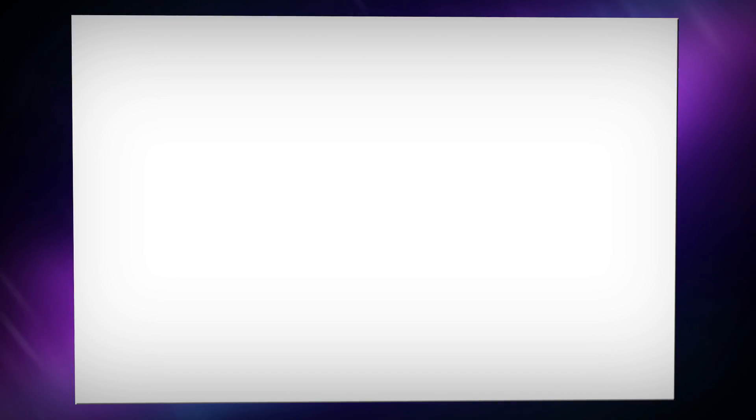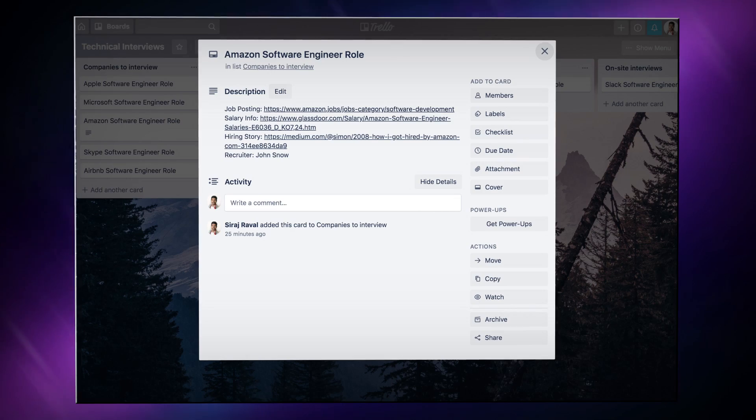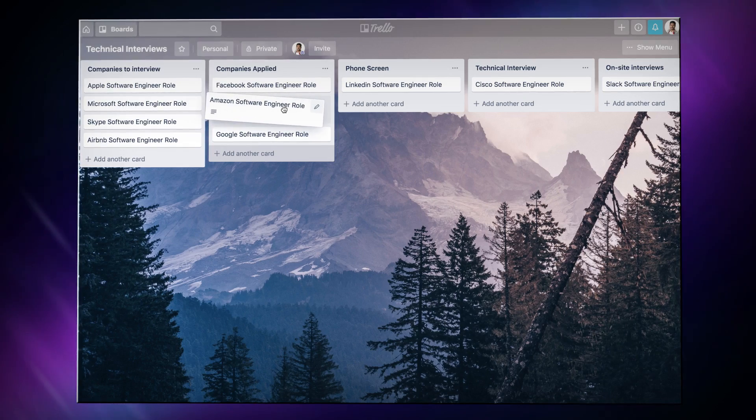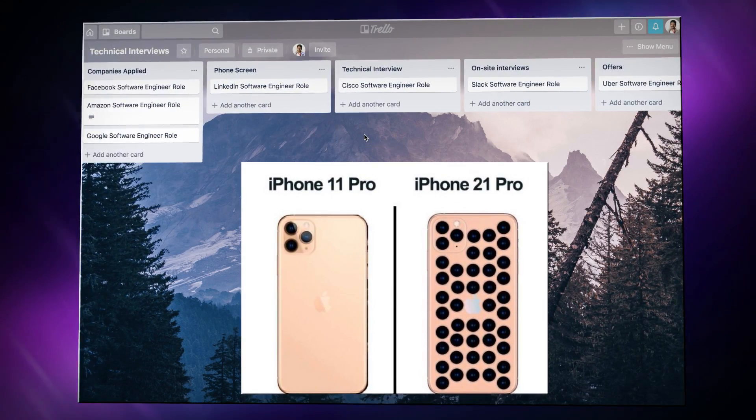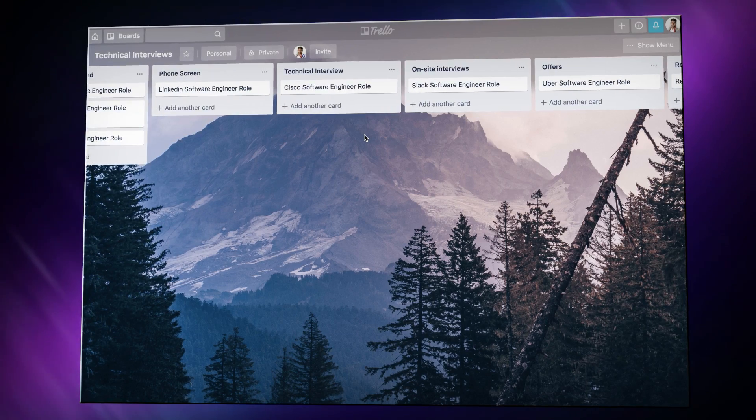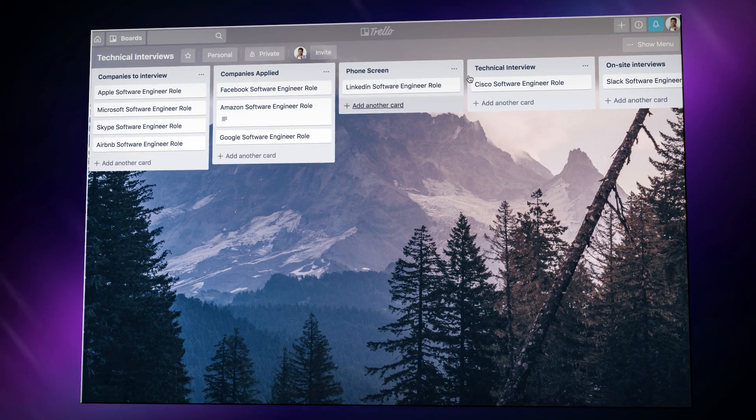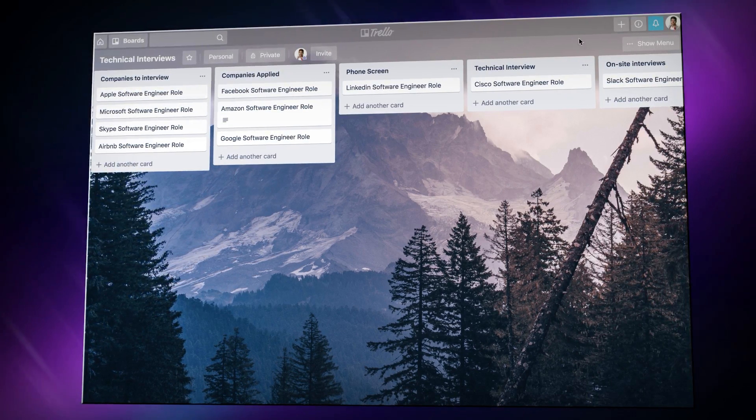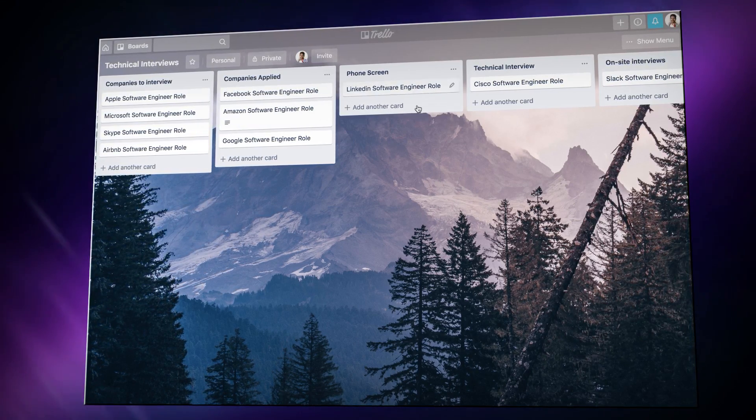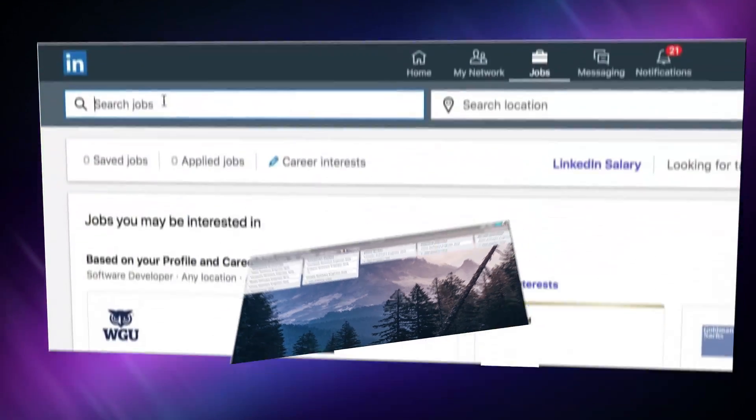Cards are moved between columns as they work their way through the process. You can create cards for companies that you're interested in. Apple forgot how to innovate, so they're probably not going to be included. Then move them along the columns as you progress through the interview process from the initial application to the phone screen to each round of interviews all the way until you get either an offer or a rejection from them.